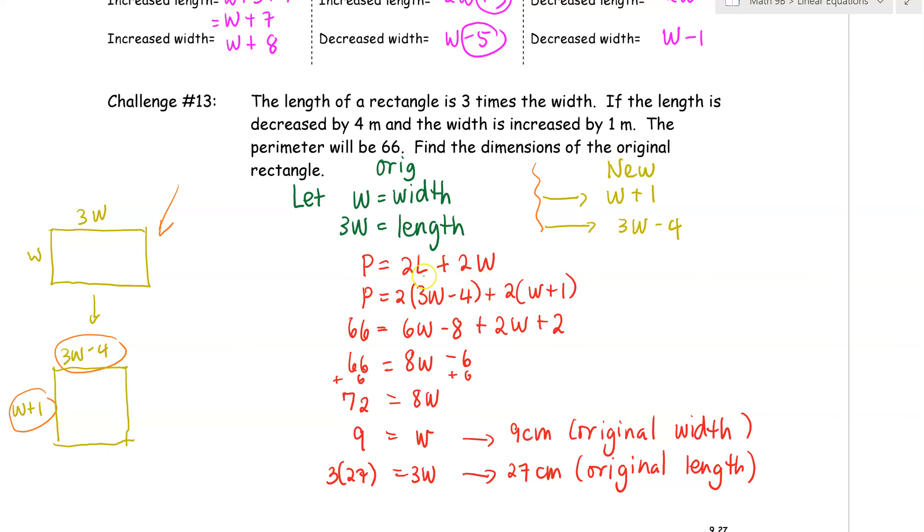And we know that the new length now is 3W minus 4. And the new width is now W plus 1. Take note of the use of the grouping symbols here. And we have to use distributive property to simplify this expression. And the rest there would be the algebra that we know. And we're going to get the value equal to 9. And we go back and W is actually our original width. So it's 9 centimeters. Therefore, the original length is 3 times that, which is just 27. And you can write your final sentence as the original width is 9 centimeters and the original length is 27 centimeters. Easy peasy, lemon squeezy. So that's challenge number 13.